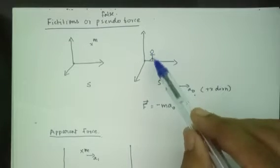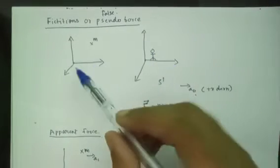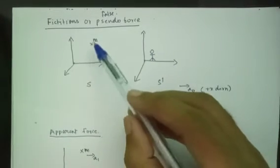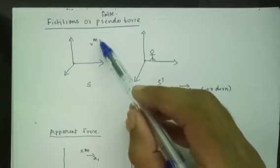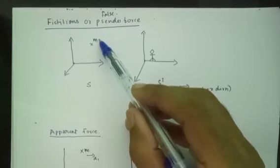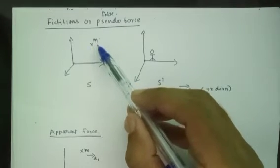In this frame we have a person. In this frame we have a particular object, and this object is stationary.